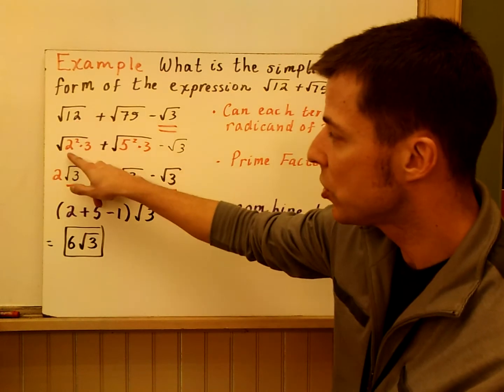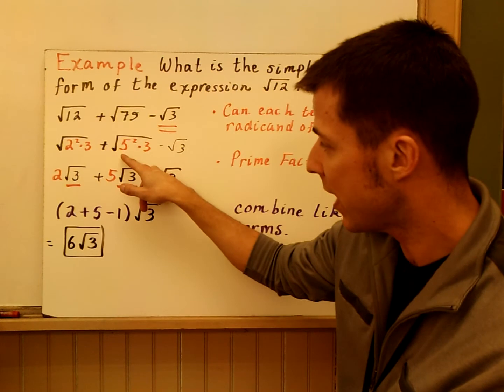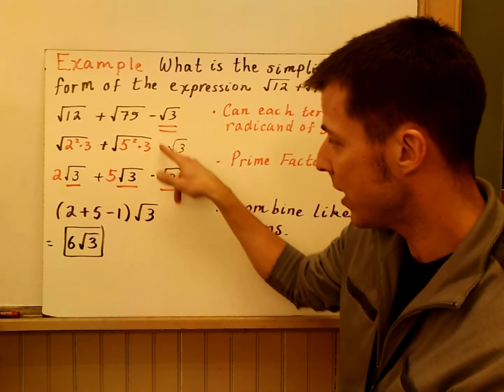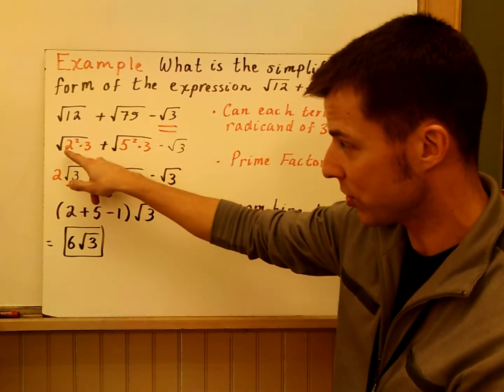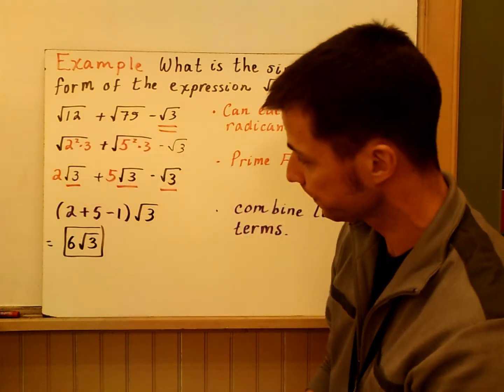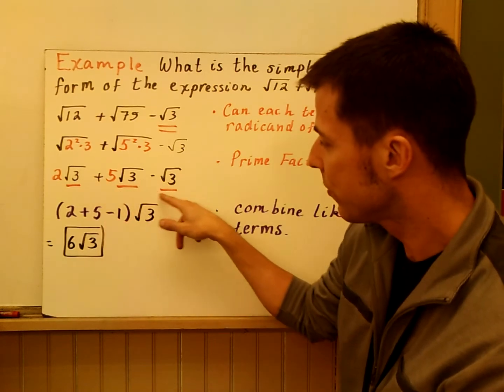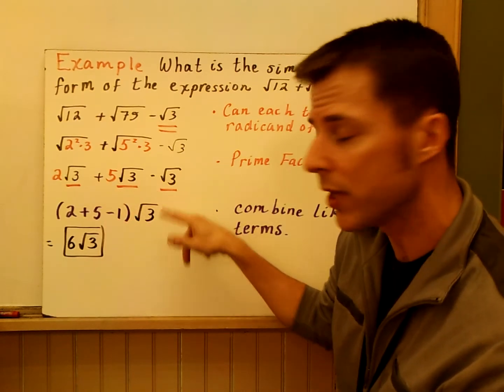So 12 is 2 squared times 3. 75 is 25 times 3 and minus root 3. And notice how these are perfect squares. I wanted perfect squares here because this is a square root. So I get 2 root 3 plus 5 root 3 minus root 3.